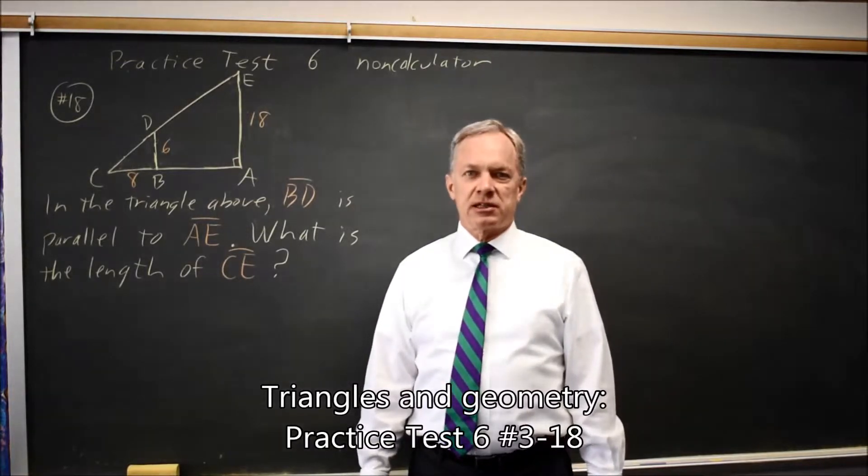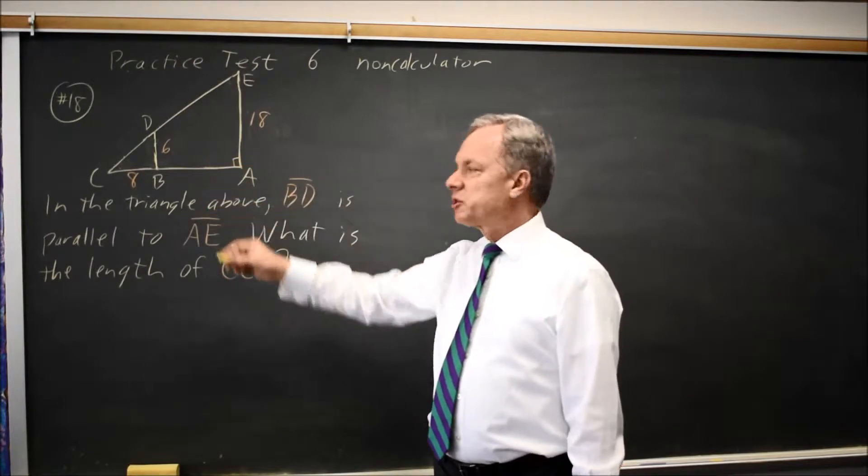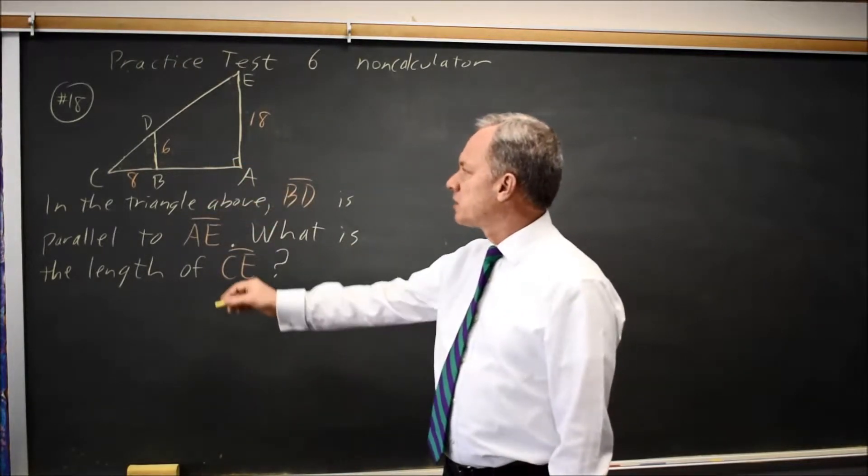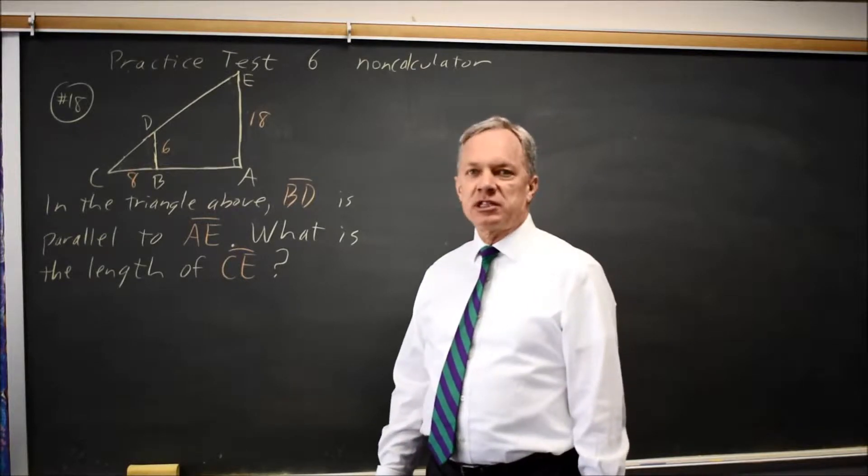This is SAT practice test 6, non-calculator question number 18. We have a diagram showing triangles, and we're told that side BD is parallel to AE, and they ask for the length of CE.